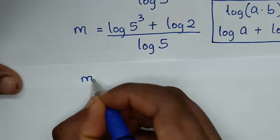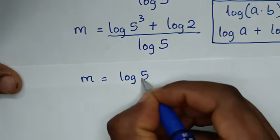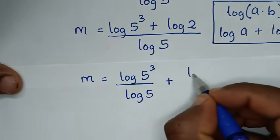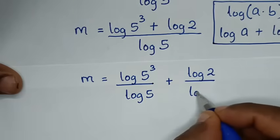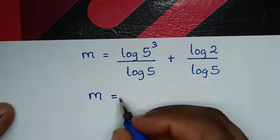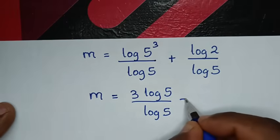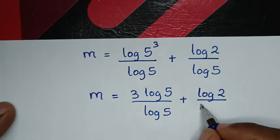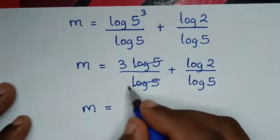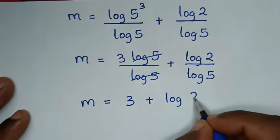Then in the next step, m is equal to log of 5 power of 3 over log of 5, plus log of 2 over log of 5. Applying the power rule, 3 log of 5 over log of 5 simplifies to 3. And log of 2 over log of 5 is the same as log base 5 of 2. So the final answer is m equals 3 plus log base 5 of 2.